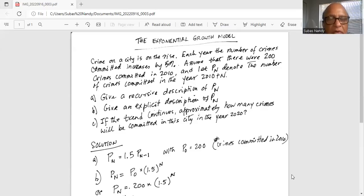Part A: give a recursive description of Pn. So remember crime increases by 50% every year. So that means P subscript n, number of crimes committed in year 2010 plus n, is 1.5 times Pn minus 1 because crime is increasing by 50% every year.